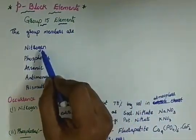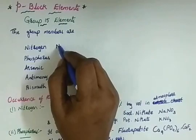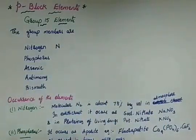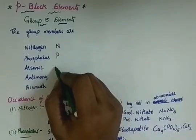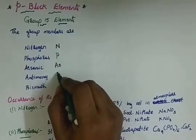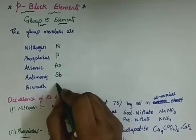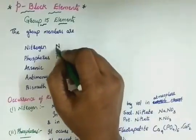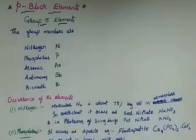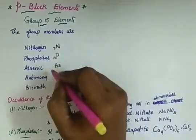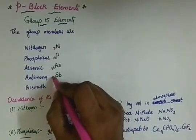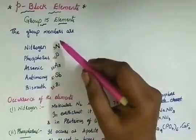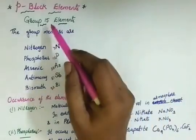The different group 15 elements are: nitrogen (N), phosphorus (P), arsenic (As), antimony (Sb), and bismuth (Bi). These are the short notations of these elements. Their atomic numbers are 7, 15, 33, 51, and 83 respectively. These are the elements of the 15th group.